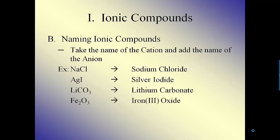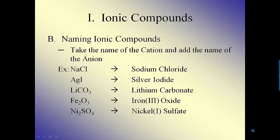This is a little bit more complicated, and I'll get into why there's a Roman numeral in the middle when we get into forming compounds in the next video. Fe is iron, O is oxide, and we end up getting iron(III) oxide. Ni is nickel, SO4 is sulfate, and we see it's nickel(II) sulfate. That's everything you need to know for the naming of ionic compounds. Now move on to the second video, which is going to talk about forming ionic compounds and crisscrossing charges.